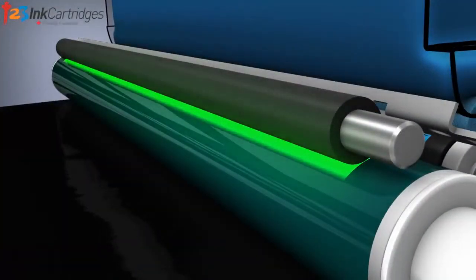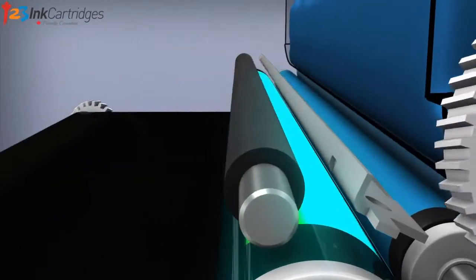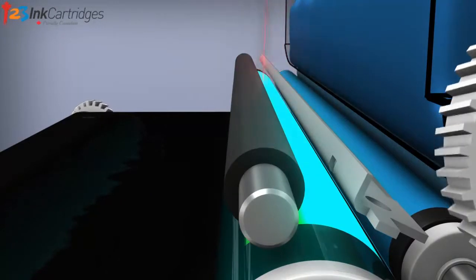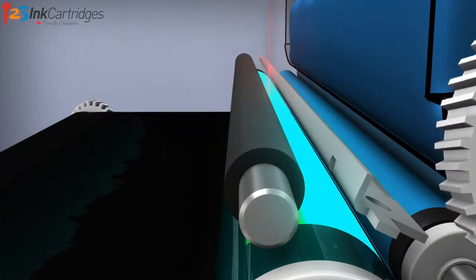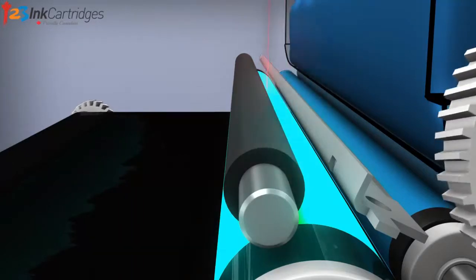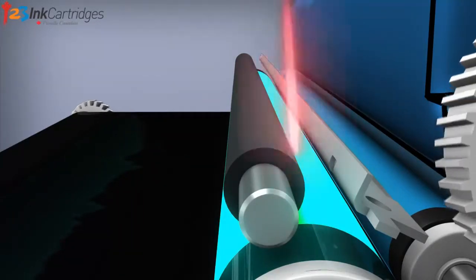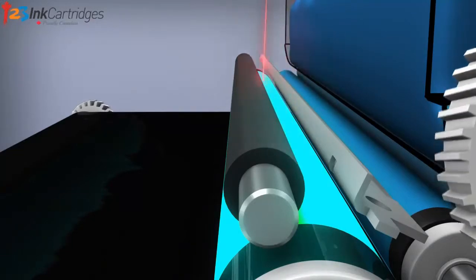The primary charge roller or PCR rotates next to the OPC drum and applies a negative charge to the surface of the OPC drum, which prepares it for the imaging process. The OPC drum is then exposed to a laser, which forms the image. This area is more positively charged than the areas not exposed to the laser.